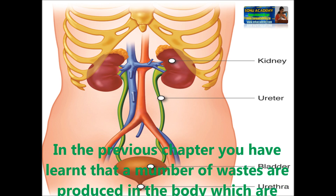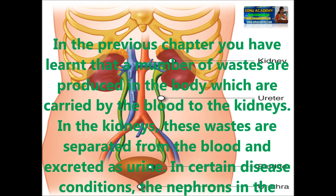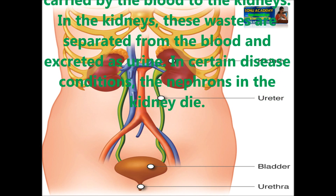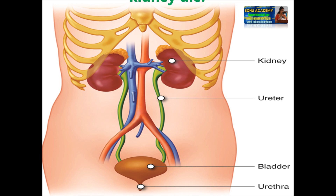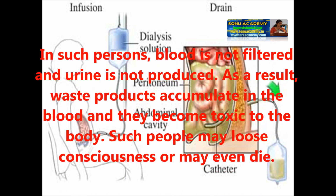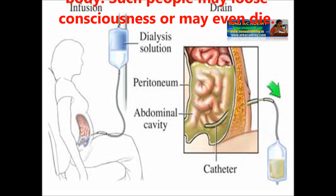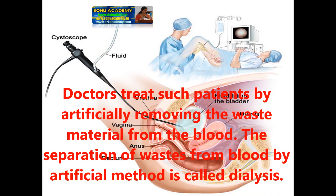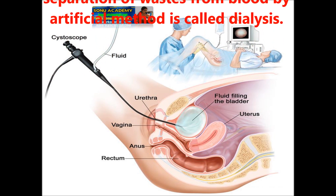Let us see what dialysis is and its principles. In the previous chapter, you learned that a number of wastes are produced in the body which are carried out by the blood through the kidneys, where these wastes are separated from the blood and excreted as urine. In certain disease conditions, the nephrons in the kidneys die. In such persons, blood is not filtered and urine is not produced. As a result, waste products accumulate in the body and become toxic. Such people may lose consciousness or may even die. For this, the doctor treats such patients by artificially removing the waste material from the blood. This artificial separation of waste materials from the blood is called dialysis.